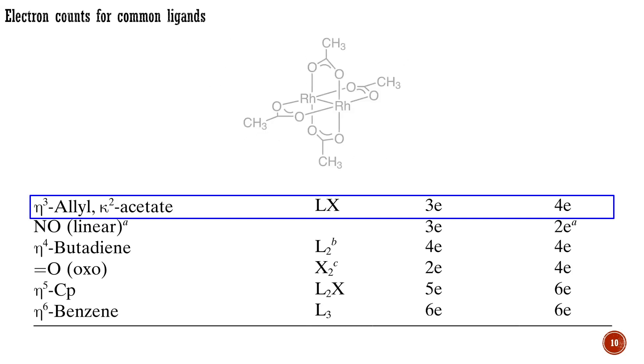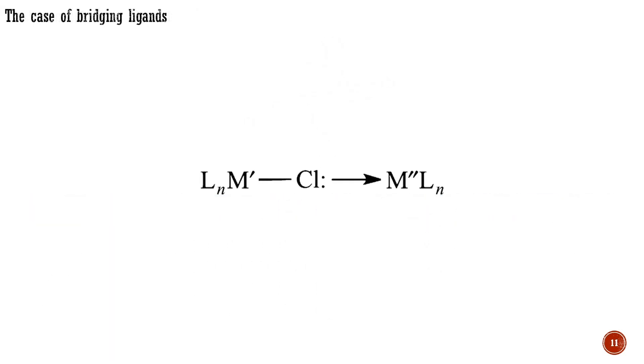The Greek letter kappa is normally used instead of eta when describing ligands that bind via non-contiguous atoms, such as a chelating kappa-2 acetate in this rhodium complex. As you can remember from the previous lecture, ligands that bridge are indicated by the prefix mu.